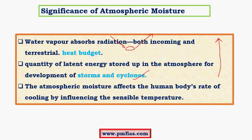Atmospheric moisture also affects the human body's rate of cooling by influencing sensible temperature. When we sweat in hot conditions, the sweat evaporates absorbing latent heat of evaporation from our body, making us feel cool. Consider two situations — a person living in Chennai (coastal) and one in Bengaluru (interior). In Bengaluru humidity is low because it is far from large water bodies, while Chennai on the sea coast has significant moisture.